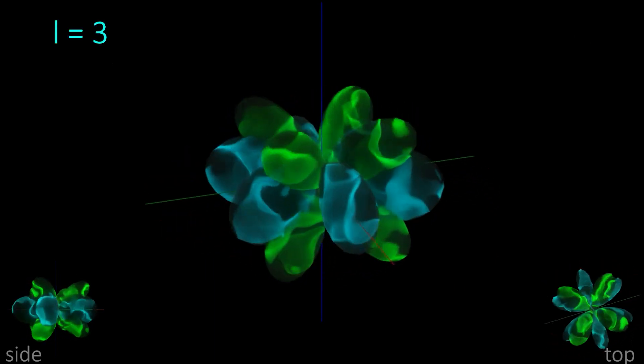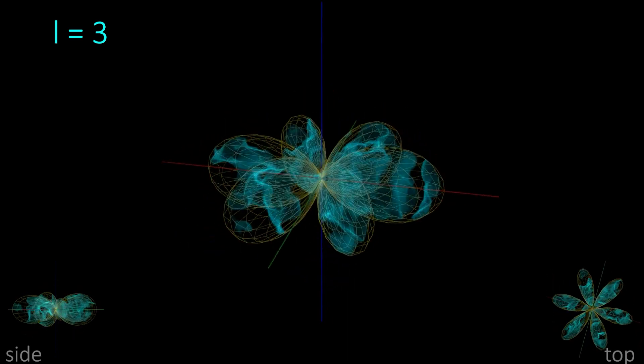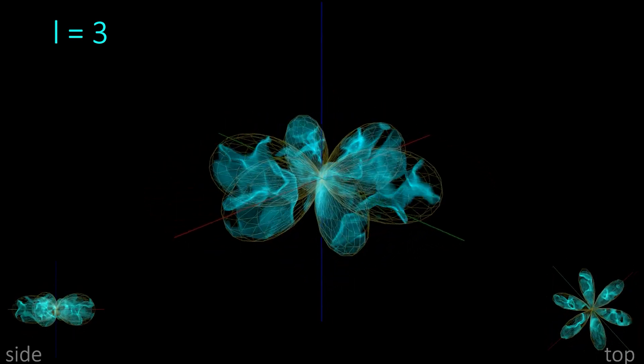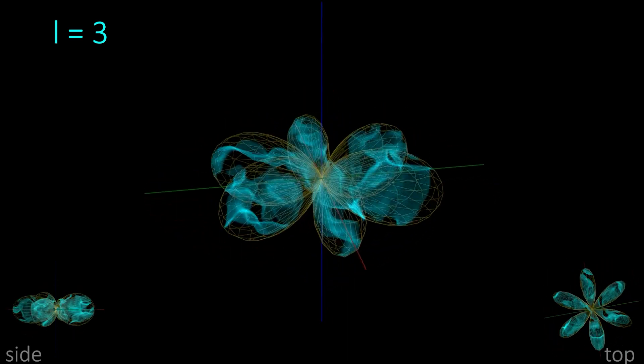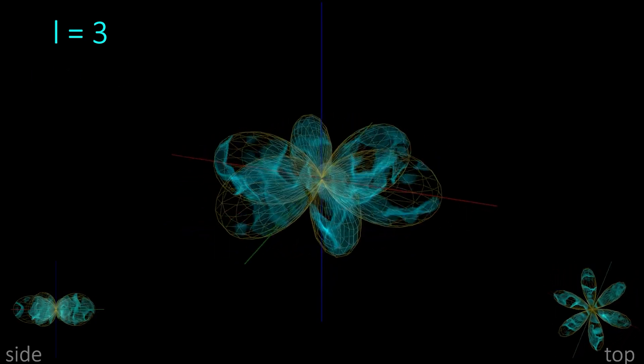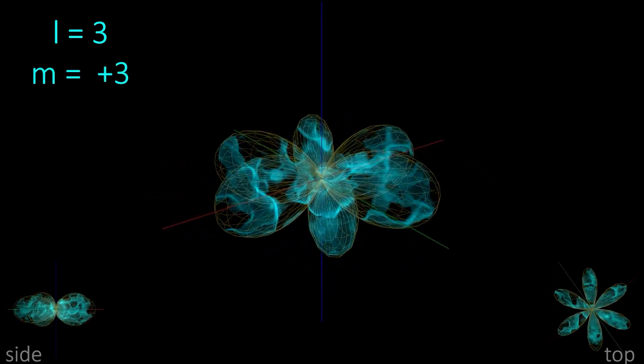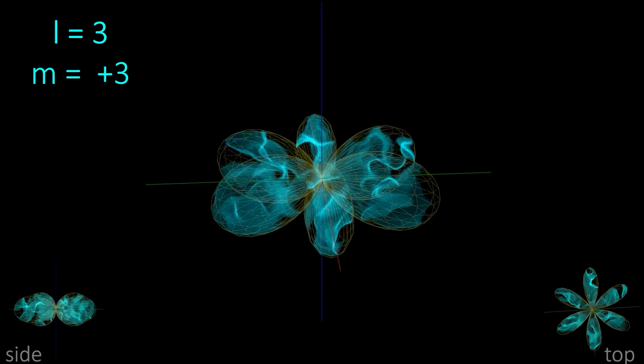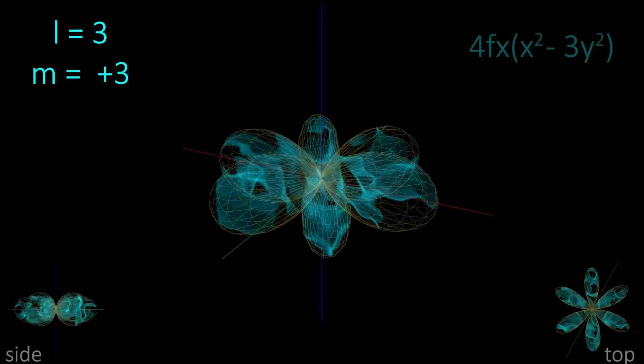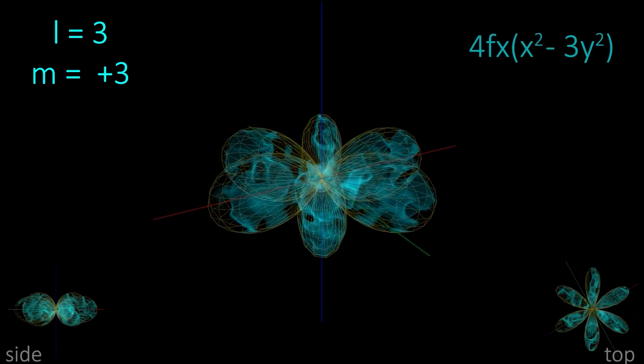With angular momentum quantum number L equal to 3, the magnetic quantum number can be plus or minus 3. So, for plus or minus 3, we have 6 lobes. M plus 3 has 6 lobes with one set aligned in the x-axis, for fx x squared minus 3y squared.